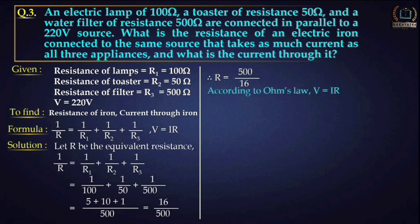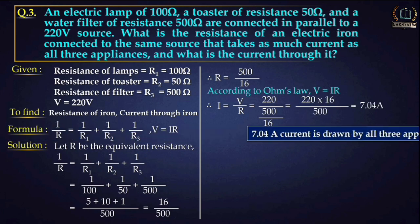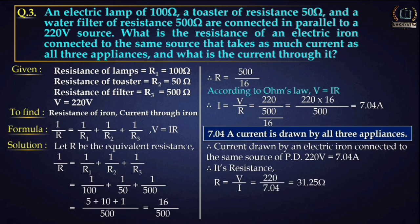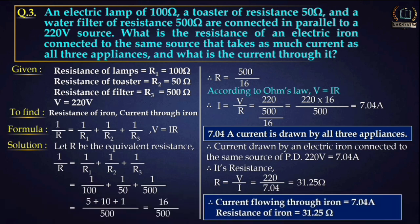By Ohm's law, I equal to V by R. Putting in V equal to 220 divided by (500/16), current I equals 7.04 ampere. This is the current drawn by all three appliances. Therefore the electric iron connected to 220 volt also draws 7.04 ampere, and its resistance R = V/I = 220/7.04 = 31.25 ohm.